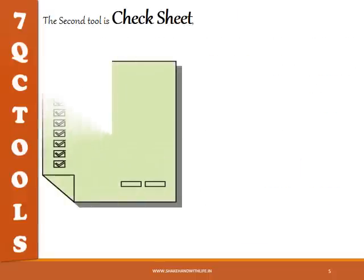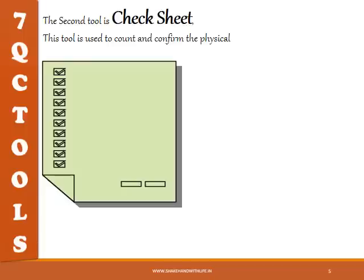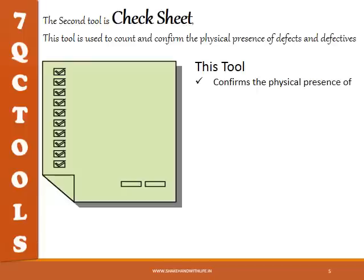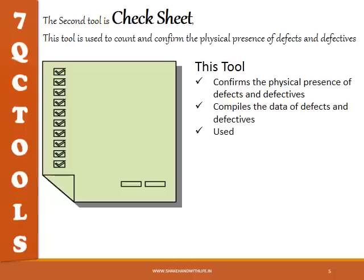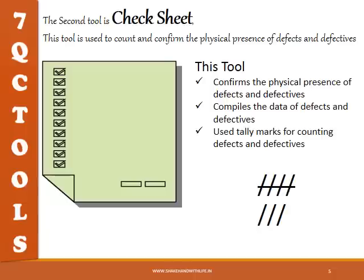The second tool is check sheet. This tool is used to count and confirm the physical presence of defects and defectives. It compiles the data of defects and defectives and uses tally marks for counting defects and defectives.